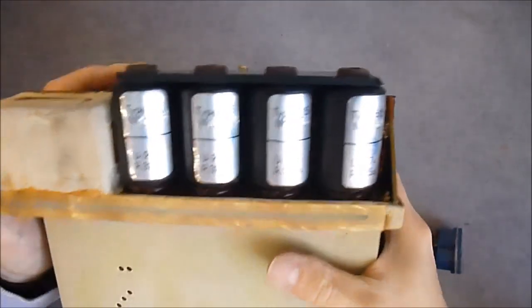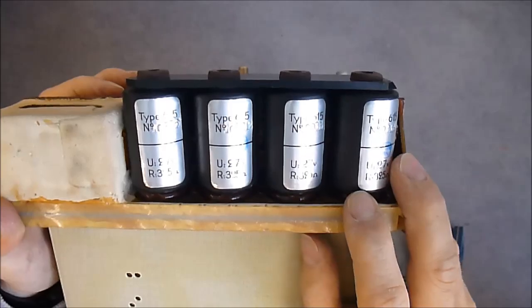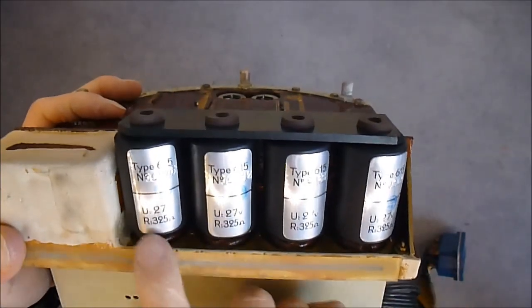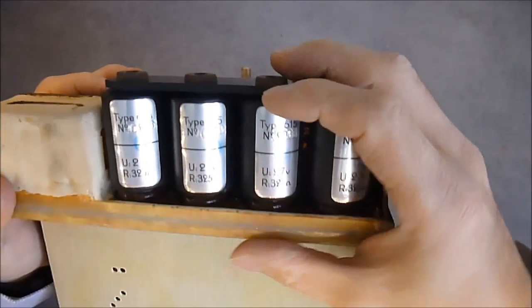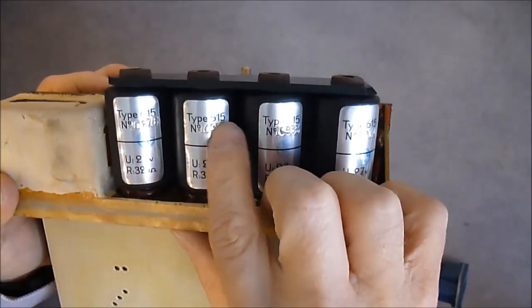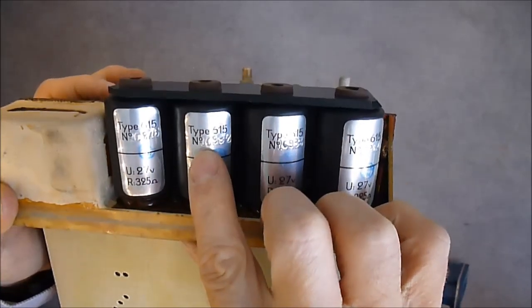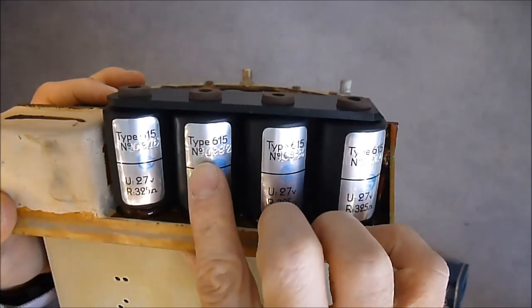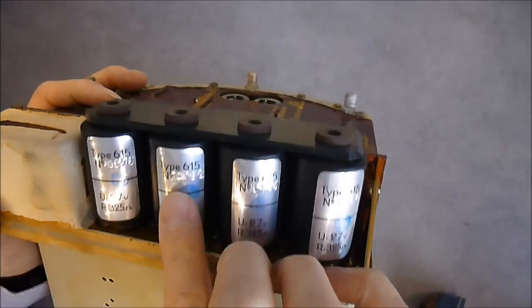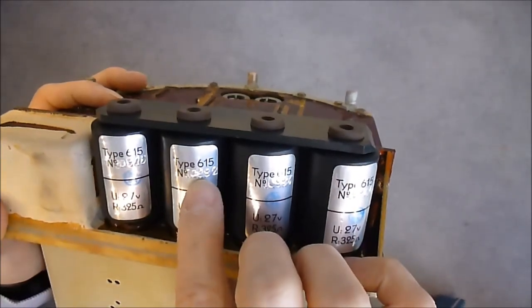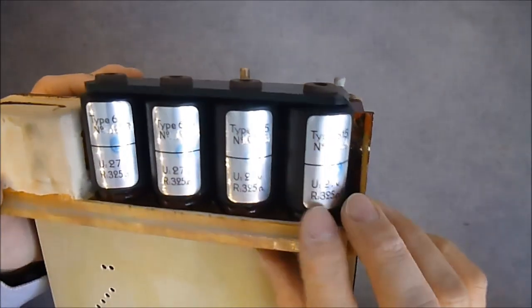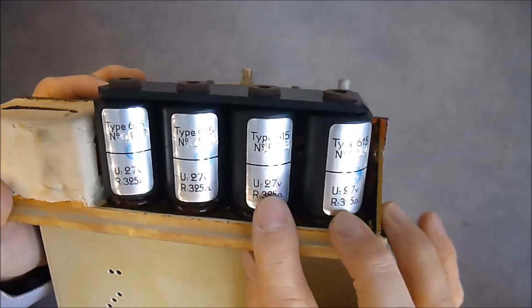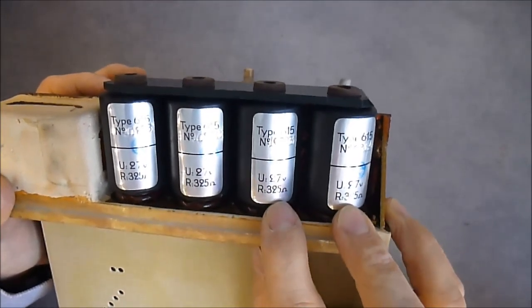And here we have four very interesting units. They are plugged in vacuum tube sockets. And it is written type 615. With serial numbers, 10,982 and 83 here. And these two ones are not machine numbers. So you have voltage and the resistance value written on them.